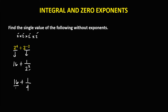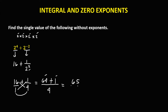For addition of fractions, put a denominator of 1 under 16 and apply cross multiplication: 16 times 4 is 64, plus 1 times 1 is 1, over 1 times 4 which is 4. Simplifying: 64 plus 1 is 65, over 4. The answer is 65 over 4.